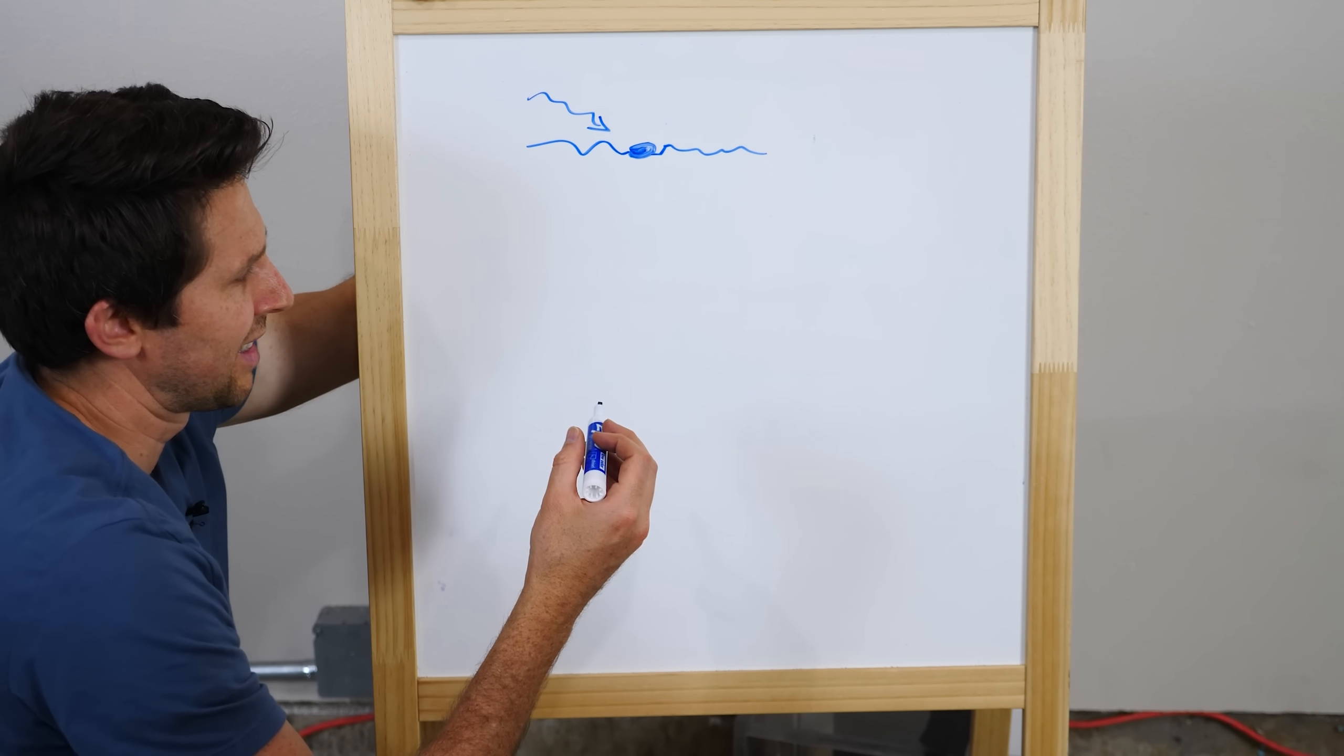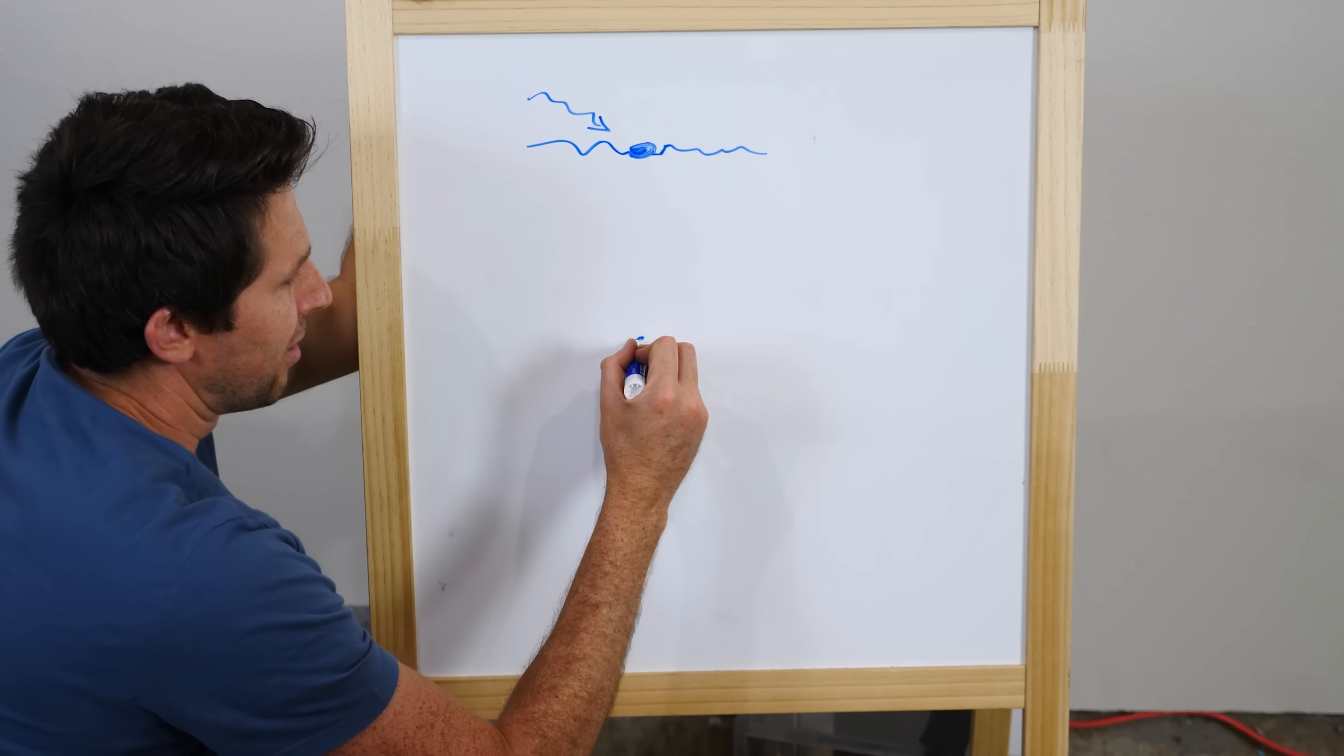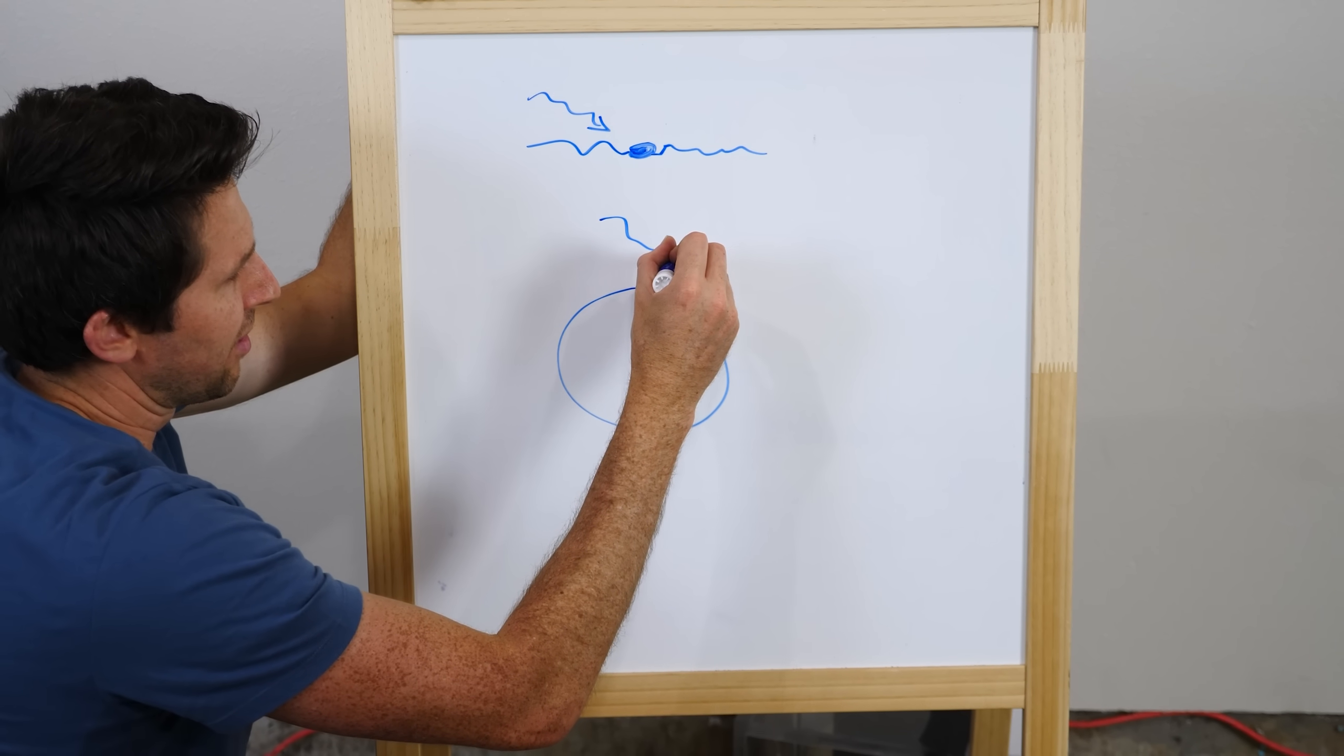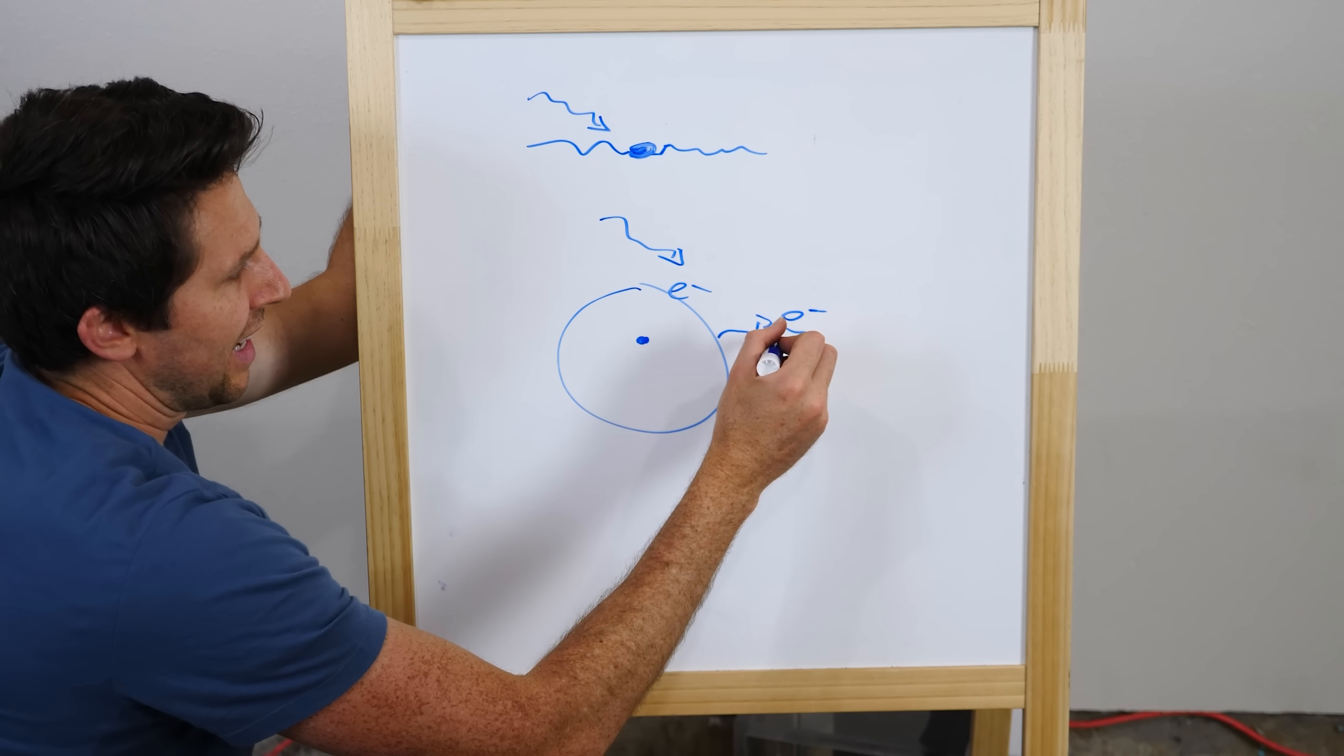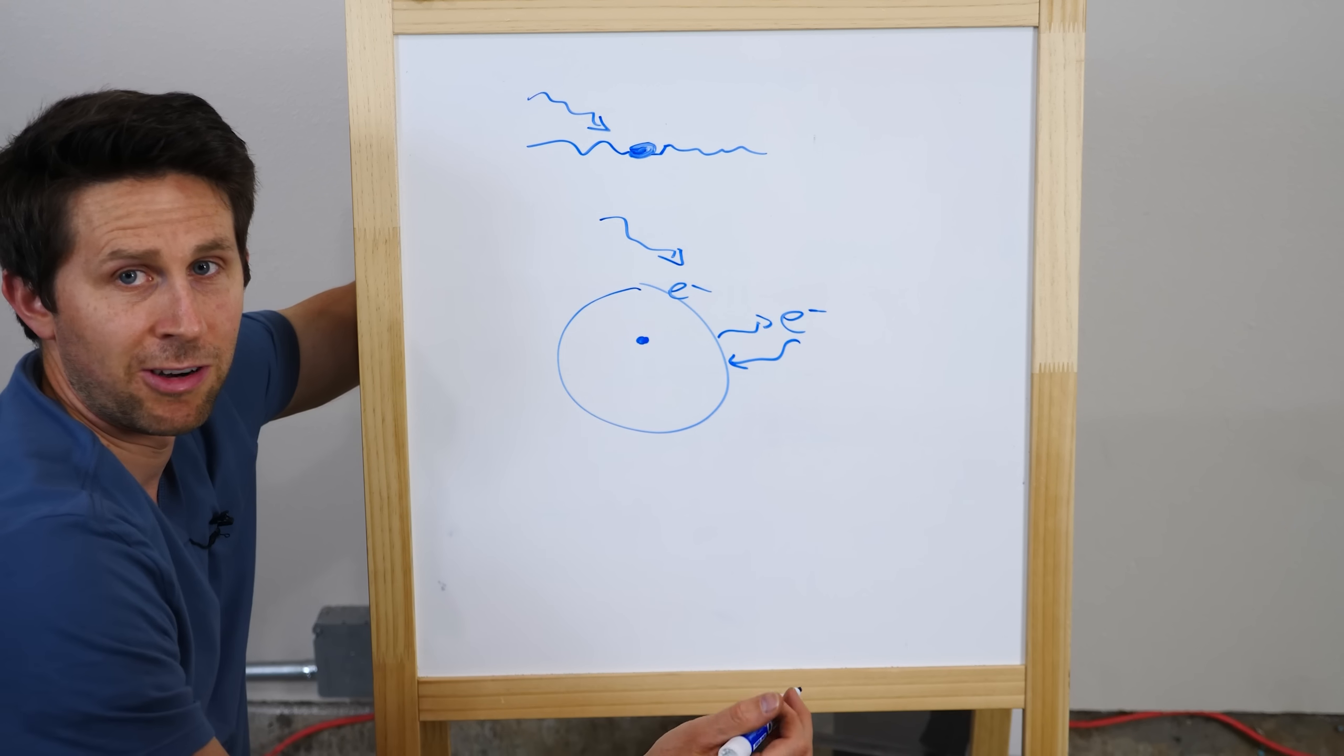But then Einstein came along and he said, well, what's happening is the atom isn't actually vibrating. We know that the atom has a nucleus and around it are some electrons. And when a photon comes in and hits the electron, it pushes the electron up to a higher energy state. And then that electron falls back down that energy state and releases that photon again.